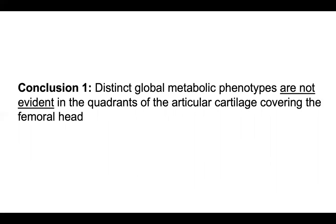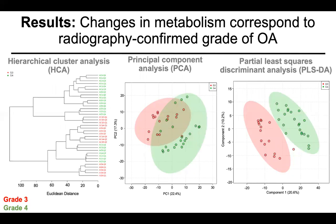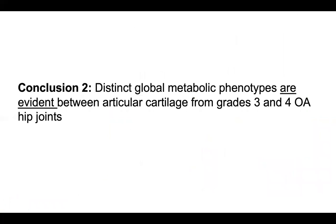Because we saw some discrimination between grades 3 and 4 samples by supervised methods, we removed the quadrant identifier and focused on grade differences. Unsupervised analyses — HCA and PCA — showed clustering of samples within their respective grades. Using supervised analysis PLSDA, we saw very clear discrimination between grades 3 and 4, with almost all samples clustering within their respective cohorts. This led to our second conclusion: distinct metabolic phenotypes do exist between articular cartilage from grades 3 and 4 OA hip joints, suggesting a global metabolic shift from one grade to the next in late-stage OA.